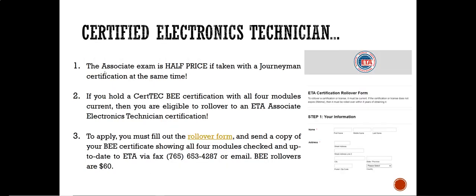The associate exam is half price if you take it along with the journeyman certification at the same time. If you hold a CERTEC B certification with all four modules, then you are eligible to roll over into an ETA Associate Electronics Technician certification.